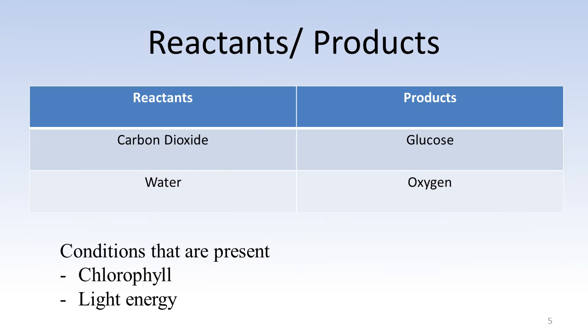On this slide, there is a summary of the reactants and products of photosynthesis. At the bottom, we have the conditions that must be present in order for the process to occur.